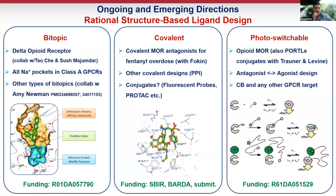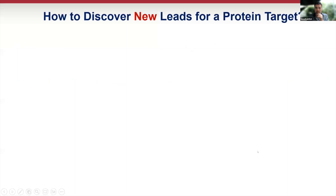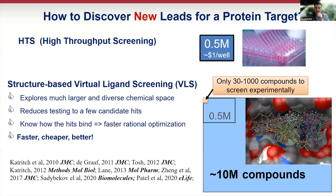That was manual design. Now let me switch to what we are trying to do in terms of gigascale screening. In terms of virtual screening, we are not novices in this field — we have about eight prospective screening campaigns, and in each of them there was a reasonable hit rate. We identified micromolar compounds in all of them. But recently there were completely new opportunities in this field where a lot of things clicked together.